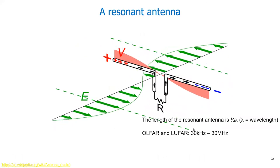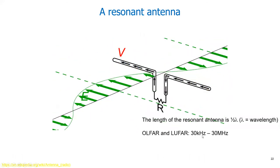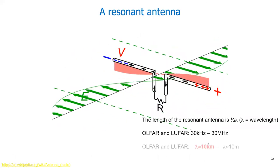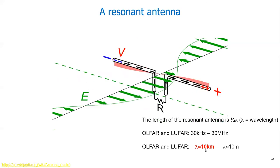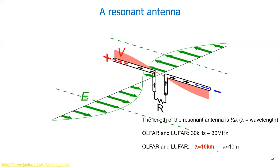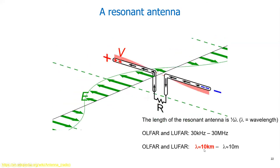If we want to look deep into the universe and see something from the Big Bang, we have to be between 30 kilohertz and 30 megahertz. The wavelengths are from 10 kilometers to 10 meters, which is huge. Especially the low frequencies are interesting.